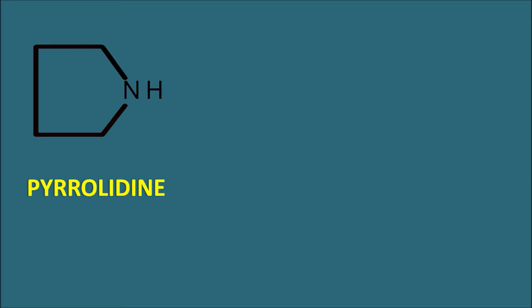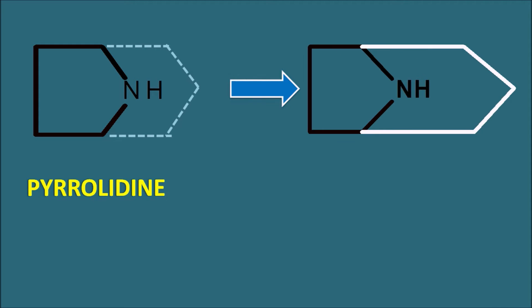The pyrrolidine ring can be further extended by forming new bonds to produce a bicyclic structure. This bicyclic nucleus is present in well-known drugs and is called the tropane nucleus. In this way, ornithine is converted into pyrrolidine, and pyrrolidine is further modified to produce the tropane alkaloids.